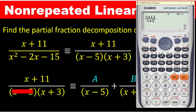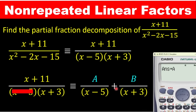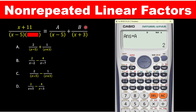The A value comes out as 2. To save it, press shift, then store, and assign it to A — so A = 2. Now to find B, we uncover (x − 5) and instead cover the B denominator (x + 3). On the left-hand side we cover (x + 3), meaning we will enter (x + 11) over (x − 5) into the calculator.